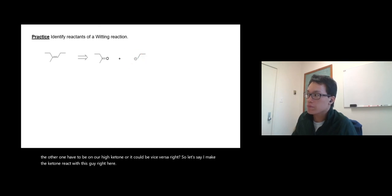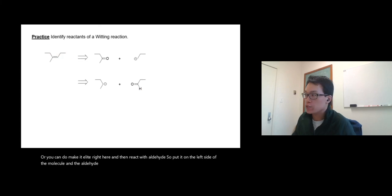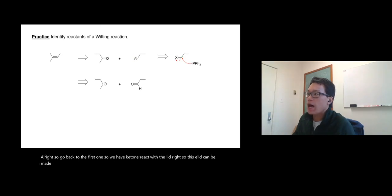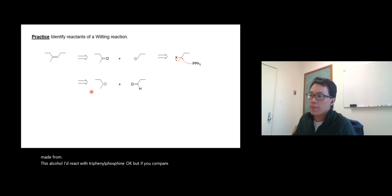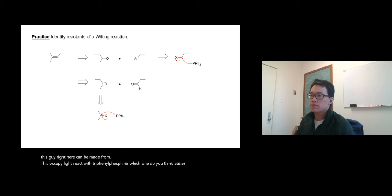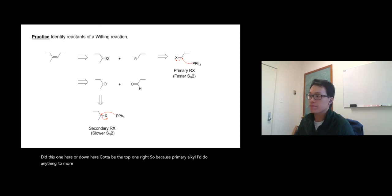Or you can make an ylide right here and then react with aldehyde. So put it on the left side of the molecule and the aldehyde on the right side of molecule—so you get two options. So go back to the first one, we have ketone react with ylide. So this ylide can be made from this alkyl halide react with triphenylphosphine. But if you compare to the ylide at the bottom, this guy right here can be made from this alkyl halide react with triphenylphosphine. Which one do you think is easier to do to make ylide, this one here or down here? It's gonna be the top one, because primary alkyl halide does SN2 more efficiently, faster SN2.